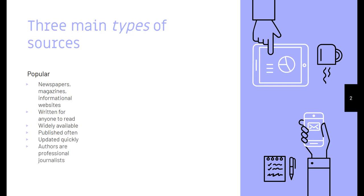Authors are professional journalists. The articles will have catchy headlines, so if you see something that has a catchy headline and it makes you want to read more, chances are the article is a popular source. And the articles themselves will be pretty short.